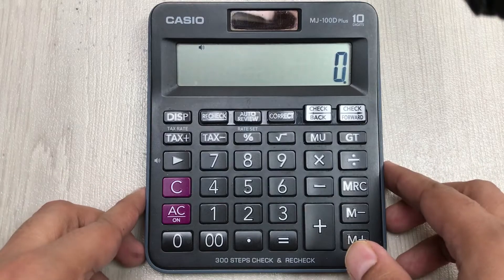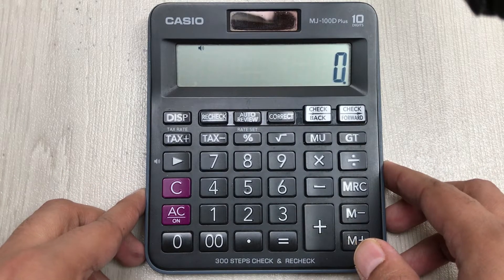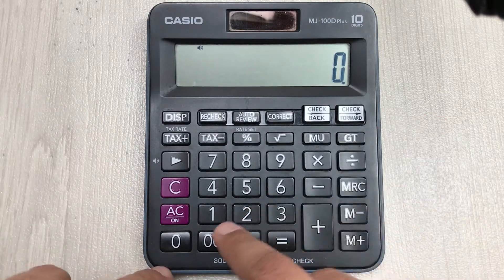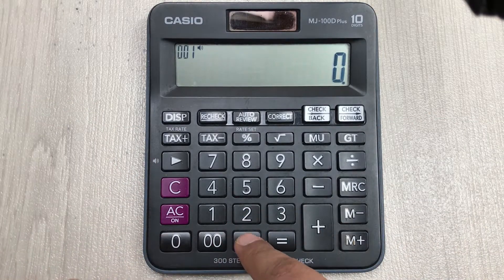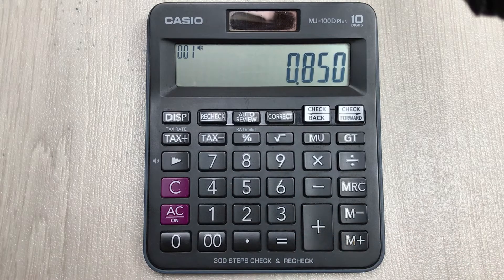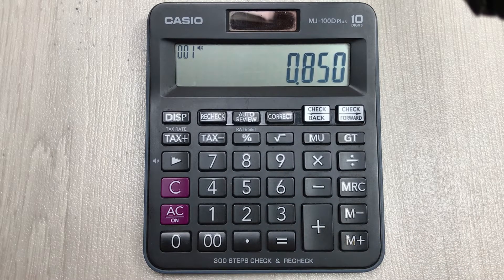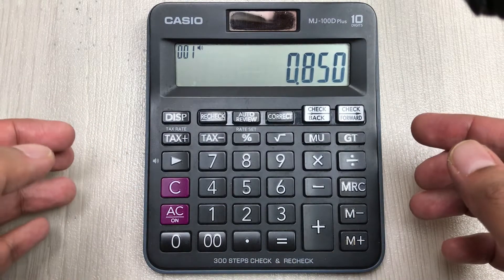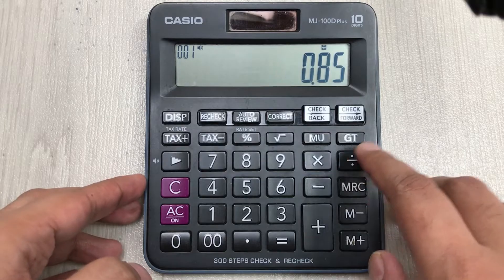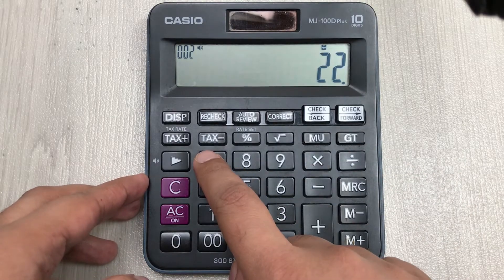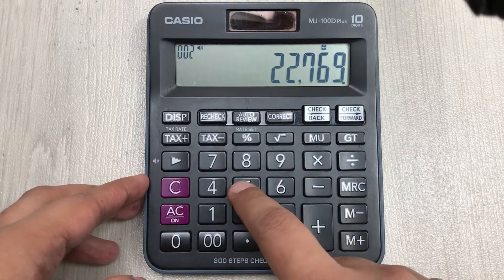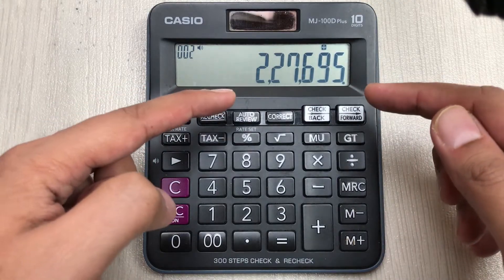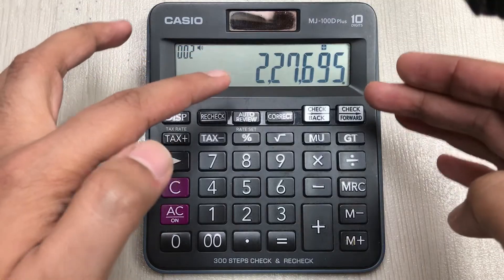For example, you want to find out the natural logarithm of 0.850. In the first step I will write 0.850. In the second step you have to divide it with 227695. You always have to divide with this number, you have to remember this number to get your answer.